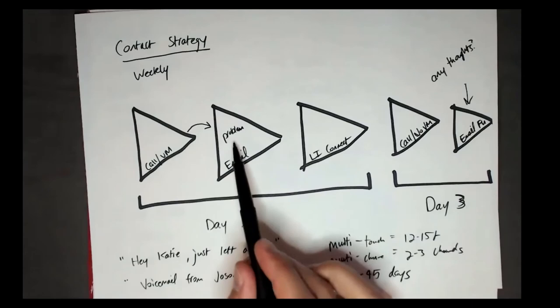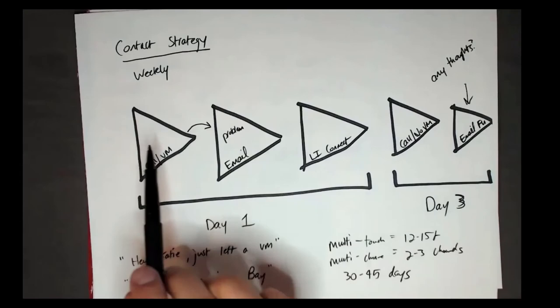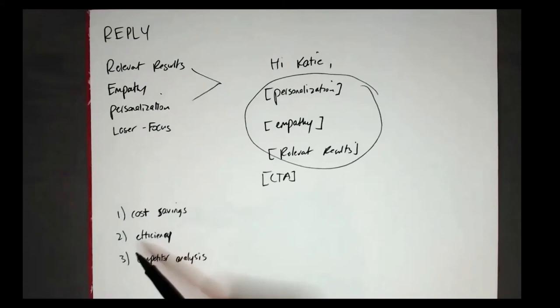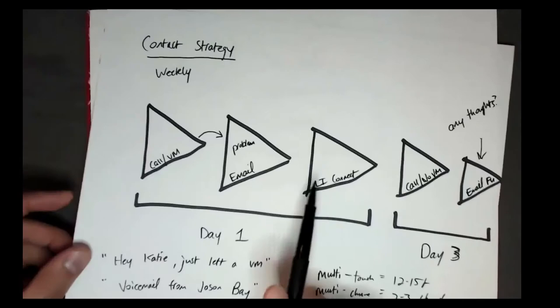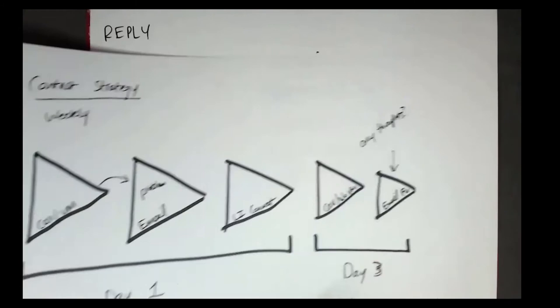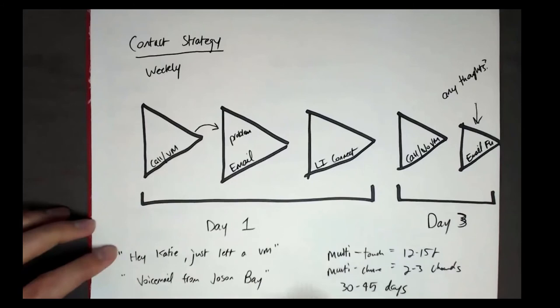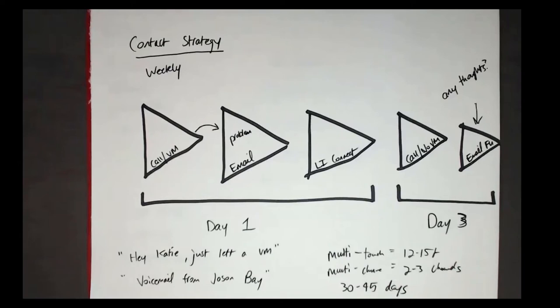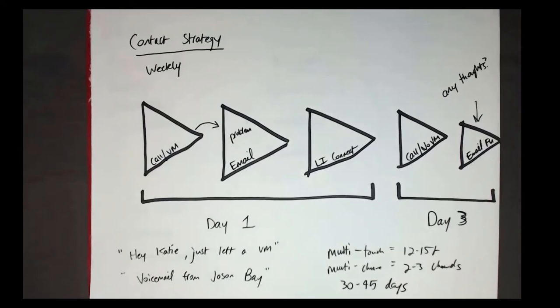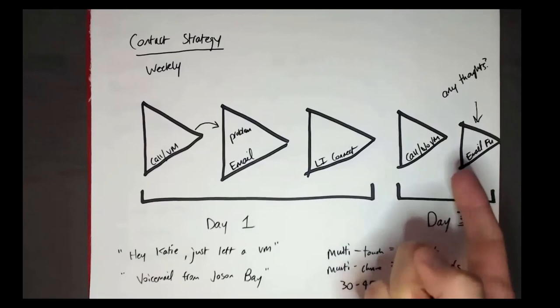So figure out the problems associated with each of these areas — those are the relevant results you can help with. The empathy piece is: what problems do people have in each of these areas? To shorten that first email, don't talk about all three — talk about just one. That first email and all the messaging for that week is geared around cost savings. Then week two, focus on efficiency. Week three, competitor analysis. That way you always have something new to share, and you can break each category into sub-topics for even more content.